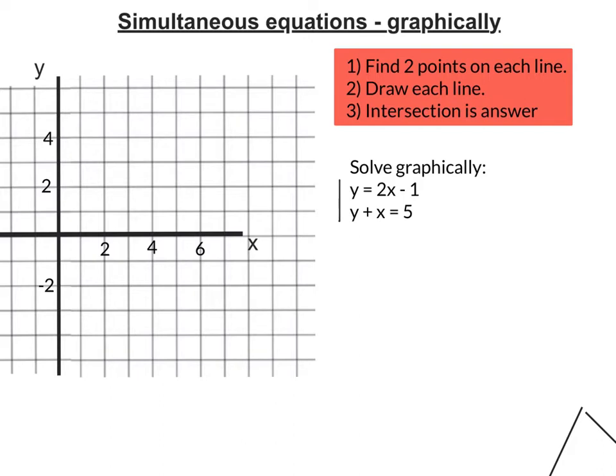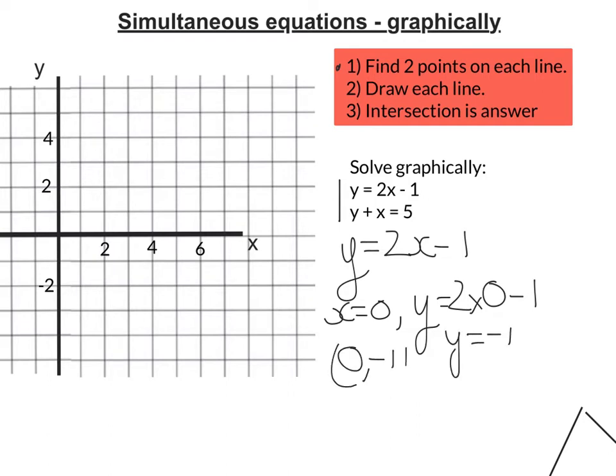To draw them, I'm first going to find two points on each line. Let's look at y equals 2x minus 1. I'm going to substitute x equals 0 and see what the y coordinate would be. So 2 times 0 minus 1 equals negative 1. The first point on this line is (0, -1). Let's plot that on the graph.